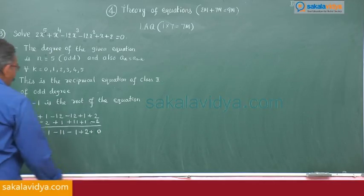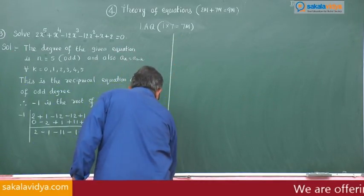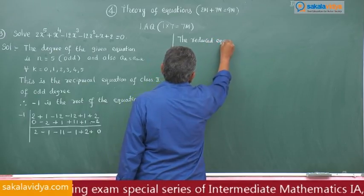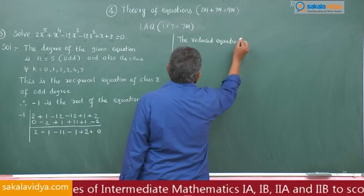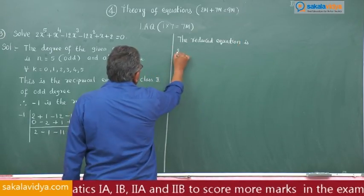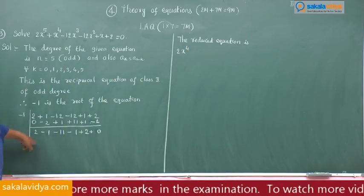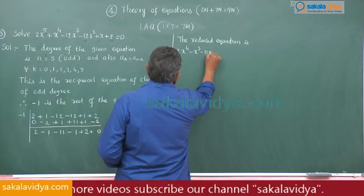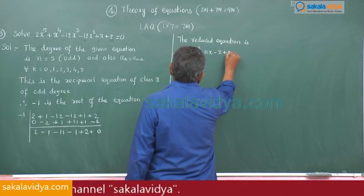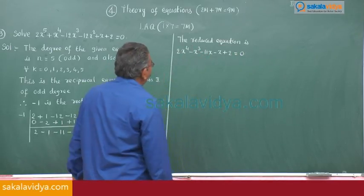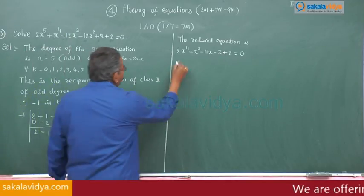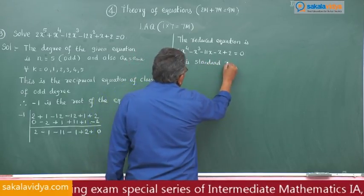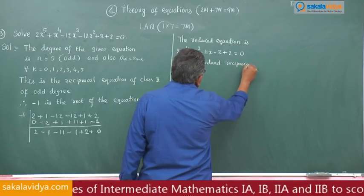Now write the reduced equation. Since one degree is reduced, the reduced equation is 2x⁴ minus x³ minus 11x² minus x plus 2 equals 0. It is a standard reciprocal equation.